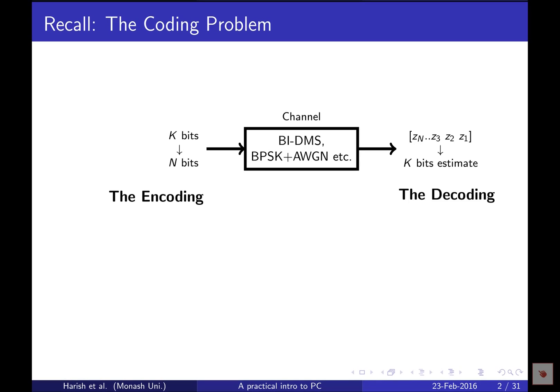Essentially, instead of directly transmitting and estimating bits, we are encoding and decoding in an intelligent way. This new variable of coding and decoding is introduced into the system, and now this system can perform much better. Shannon characterized how much better in his seminal paper, where he defined what is now called Shannon capacity — the ultimate limit of that improvement.